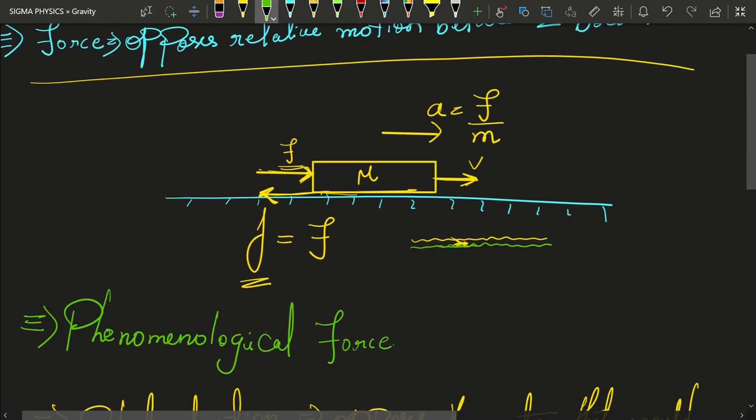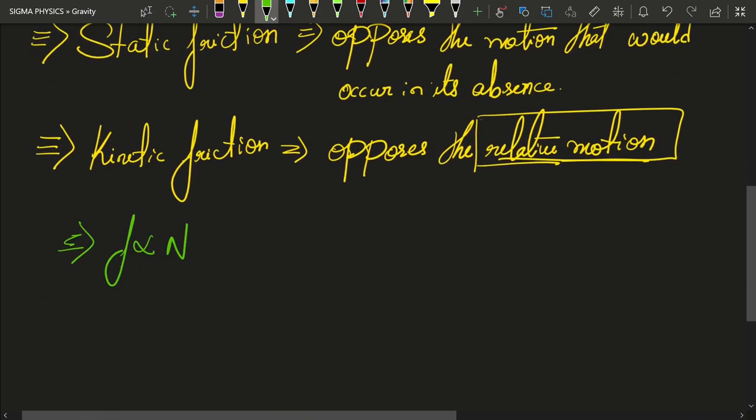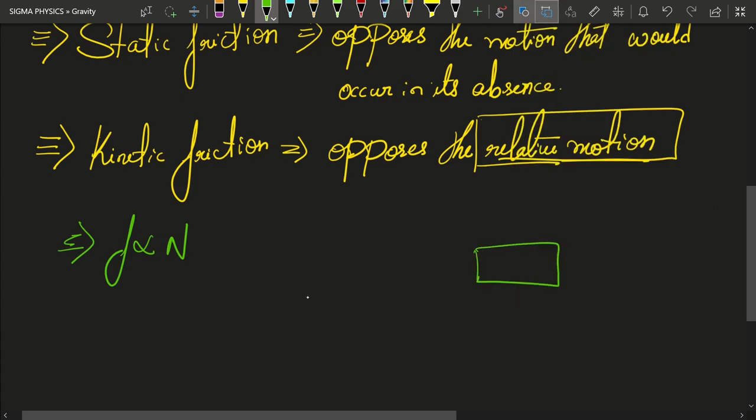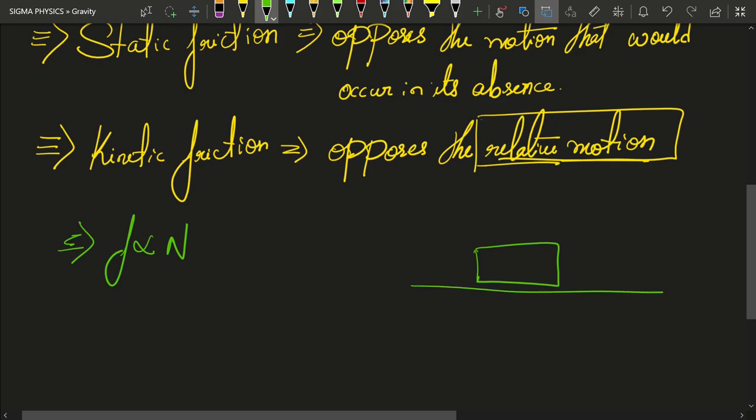Actually, if a body is in contact with another body, if this is the book, one body, which is in contact with another body, the table, then the force is actually directed in this direction, in general. And the components of this force, this is the contact force between the book and the floor. And the components of this contact force is in the perpendicular direction, which is known as the normal reaction.